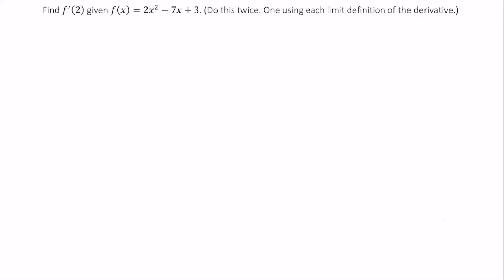Welcome. In this video we're going to use two different limit definitions of the derivative to find f prime of 2, given this function f of x. Let's begin with the first definition: the limit as x approaches a of f of x minus f of a over x minus a.